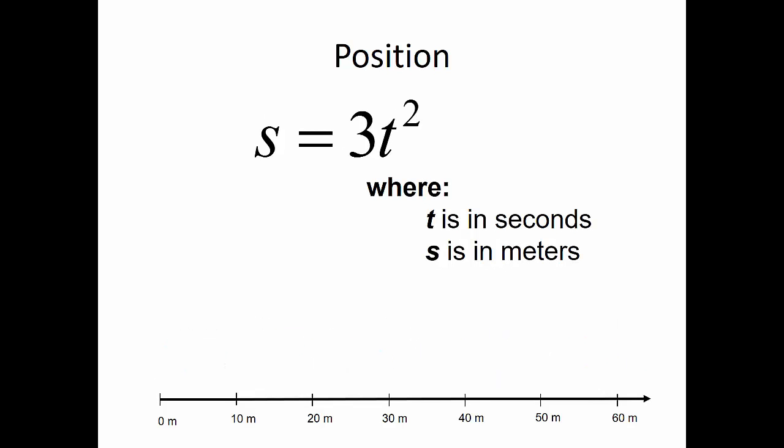But what if I change my function so that position as a function of time equals 3t²? Again, time is in seconds and position is in meters. At time zero, I start at position zero. At one second, my position is 3 meters. At two seconds, I'm at 12 meters. At three seconds, I'm at 27 meters. At four seconds, I'm at 48 meters.